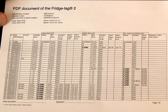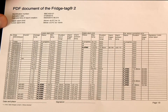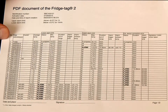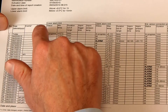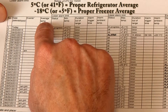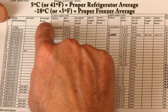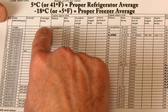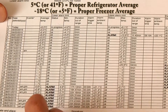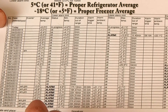When you experience an alarm with the fridge tag, it's important to print the report and take a close look at the data in order to root cause the problem. This column here is an important column — average temperatures of your storage unit. In a refrigerator unit, that should be 5 degrees C or 41 degrees Fahrenheit.